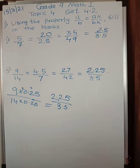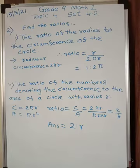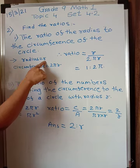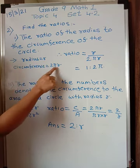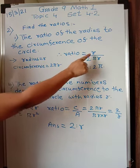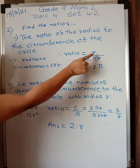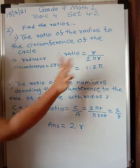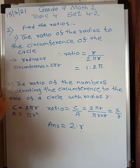Let us go for question 2 from this. Look at the second question: Find the ratios. Ratio of radius to the circumference of a circle. Radius is given by r and circumference is given by 2 pi r. So ratio is of radius to circumference: r upon 2 pi r. R r gets cancelled. You have 1 is to 2 pi. Only 2 pi remains in the denominator.